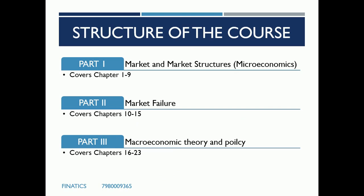The structure of the course has three parts. First is the market and market structure, which is the microeconomics part — demand, supply, perfect competition, monopoly and those topics you may have heard of if you had economics in class 12. Then there is market failure and economic policies. Finally, there is macroeconomic theory and policy, which is at the national level. The first two parts are at the individual firm level, and the last part is at the national and aggregate level.